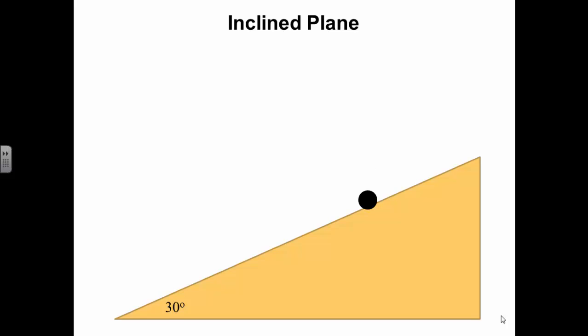Let's put the object there. We will draw a free body diagram. The weight downwards is mg, and there will be a force which is perpendicular to the surface, which is called a normal reaction.